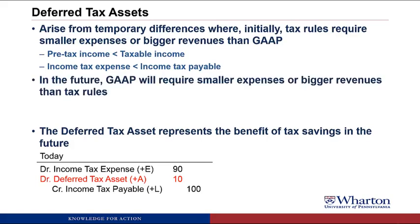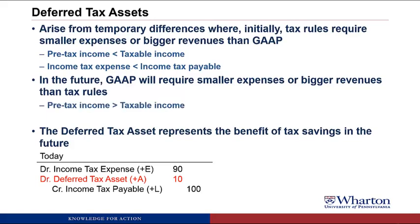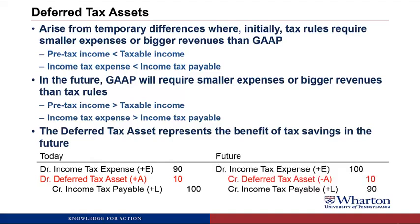In the future, GAAP rules will require smaller expenses or bigger revenues than the tax rules, which means that our pre-tax income will be greater than our taxable income. Income tax expense will be greater than income taxes payable. The journal entry will debit income tax expense for 100, credit income tax payable for 90. To balance this, we credit deferred tax asset for 10. That reverses out the temporary difference, and the deferred tax asset goes to zero once we get the benefit of those $10 of tax savings.